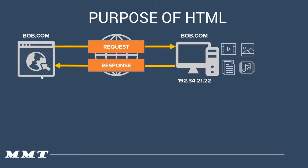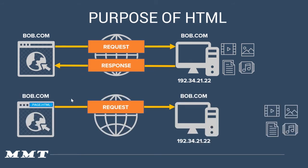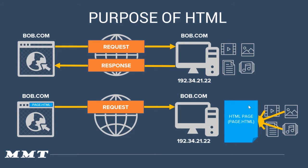Imagine the situation where the browser sends a request and the server sends a response. The browser types a URL like page.html, and that request is sent to bob.com. Bob.com has an HTML page — you write your HTML page and call it page.html; that is the extension of the HTML page. In that page you link all the resources on the server, and once written, that page is sent back from the server to the client.